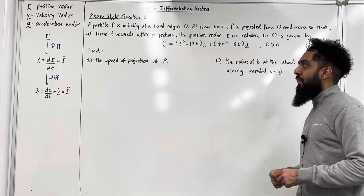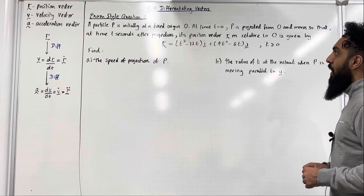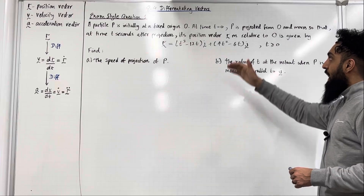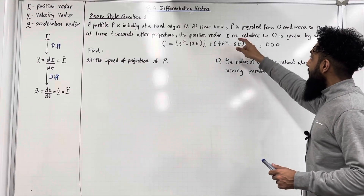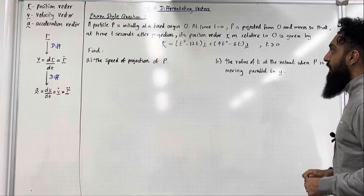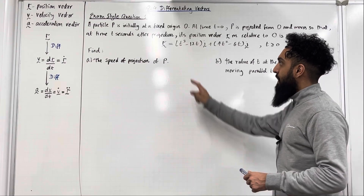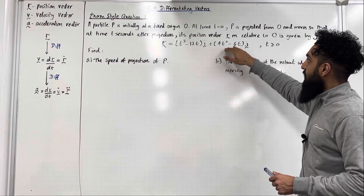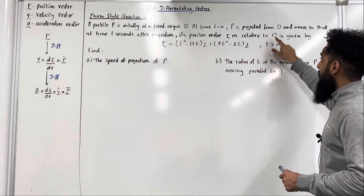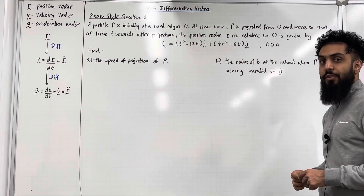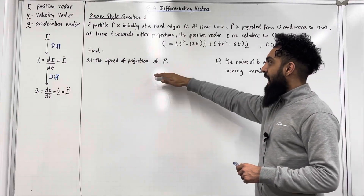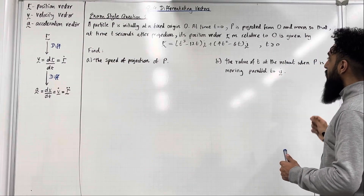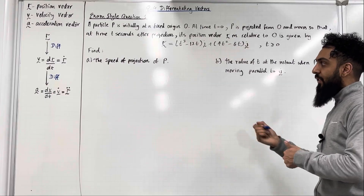Here is exam style question one. A particle P is initially at a fixed origin O. At time t equal to zero, P is projected from O and moves so that at time t seconds after projection, its position vector R squiggle metres relative to a fixed origin O is given by: R equals (t cubed minus 12t)i plus (4t squared minus 16)j, with t greater than or equal to zero. Find part a, the speed of projection of P, and part b, the value of t at the instant when P is moving parallel to the vector j.